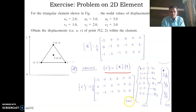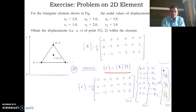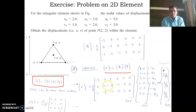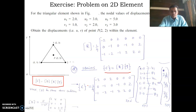The dimensions of the B matrix are 3×6 and the Q matrix is 6×1, so multiplying them gives the 3×1 elemental strain. To obtain the stress, we use sigma = D·B·Q, where D is the material property matrix and B·Q has already been found. Multiplying D by this result gives the element stress, completing the solution for the triangular element given the nodal displacement values.